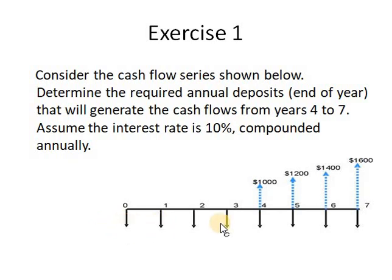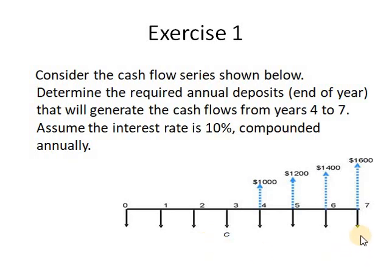I want to equate at the present. The present value of the deposits will be C, since it is already located at the present. The present value of the annuity will be P equals C into P/A at i=10% and n=7 years. This is the part related to the deposits.